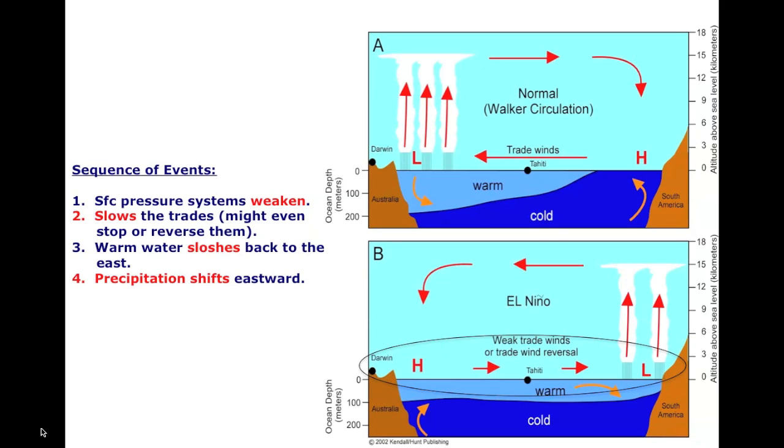As the winds slow, the Walker Cell weakens, and the warm waters that have piled up in the west slowly begin to slosh back east. While this may not seem substantial, we are redistributing pressure, heat, and precipitation across 10,000 miles of open ocean, which is approximately one-third of the way around the world. This change sets off a ripple effect in the atmosphere that can change the weather worldwide.